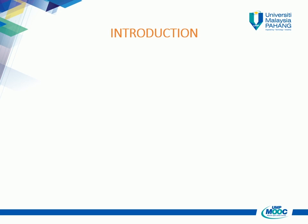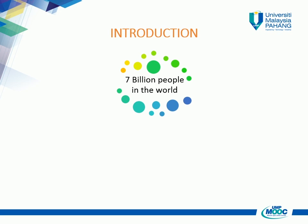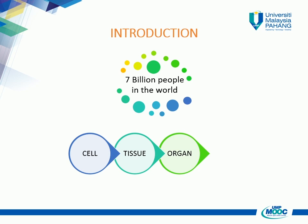There are nearly seven billion people in the world and we are all different. The human body is a fascinating and complicated structure made up of millions of cells that all work together. These cells combine to make tissues; two or more tissues combine to make organs; and several organs combine to make body systems. These systems are all controlled by complicated interactions of signals and chemicals passing around the body.